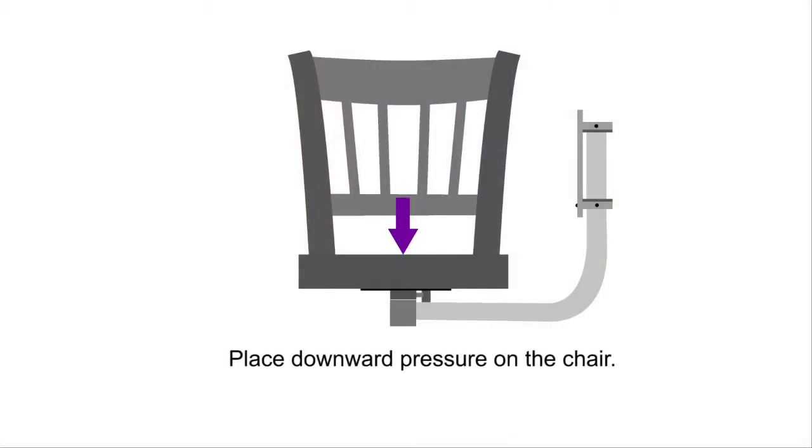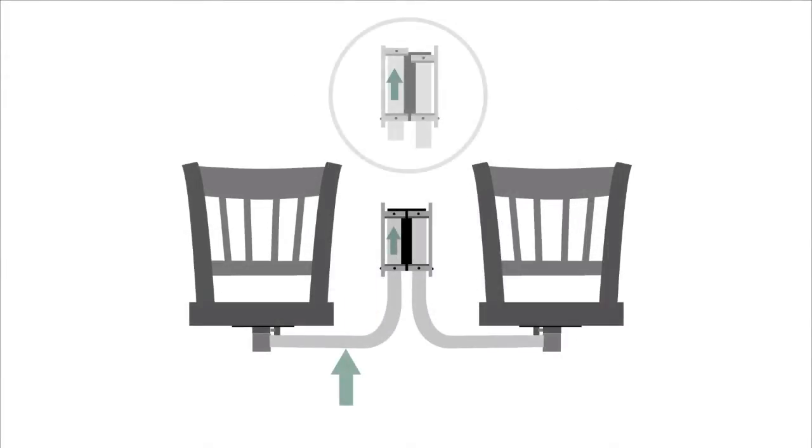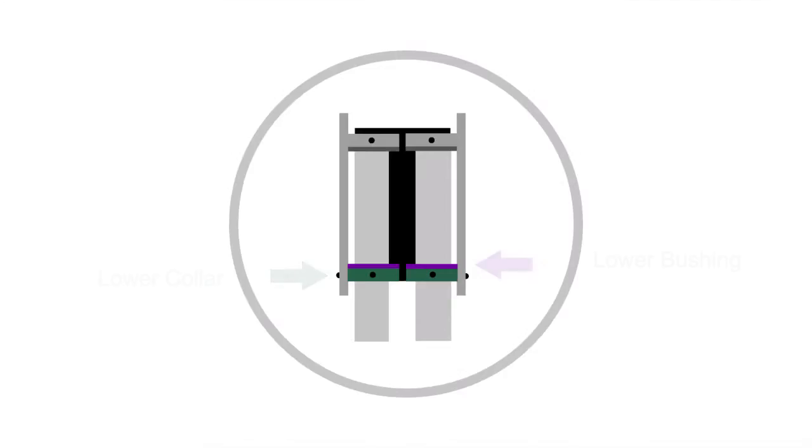Place downward pressure on the chair while repositioning the lower collar. The spring in suspension arm will cause the arm to rise and will push the lower collar down on the arm, which will create added play or a gap that may bind the mechanism. Make sure the lower collar is snug, no gap, to the lower bushing.